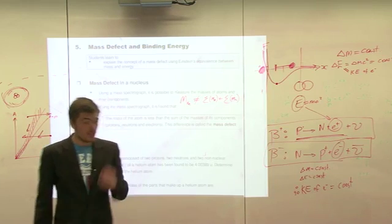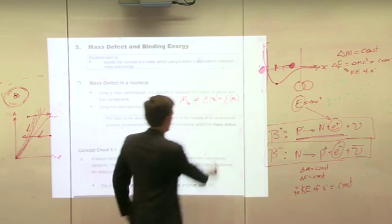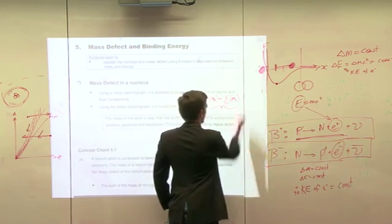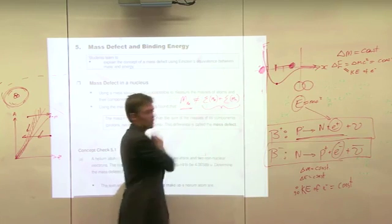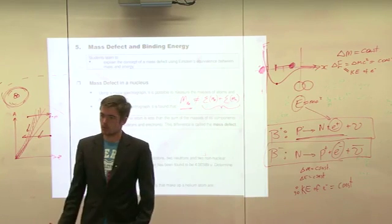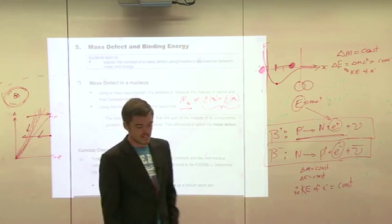There is a disparity between the mass of the nucleons in the nucleus and the mass of the nucleus itself, and that disparity is known as the mass defect.